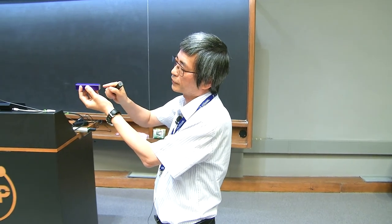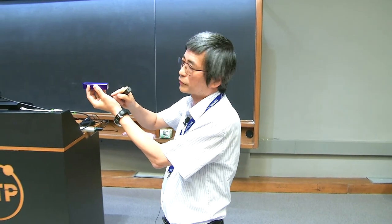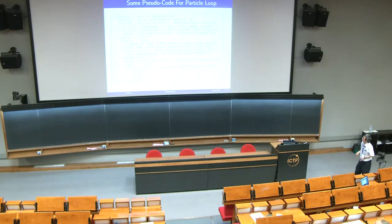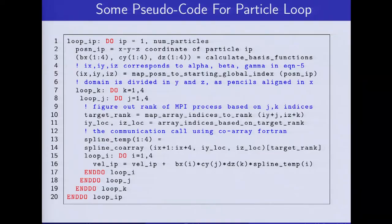We use a particular syntax referred to as co-array Fortran, with square bracket notation. Every process would have a sense-to pointer, and that makes the overall calculation somewhat faster.